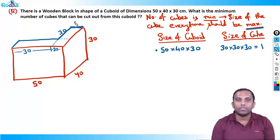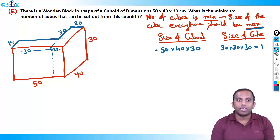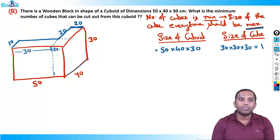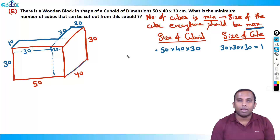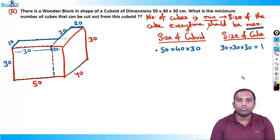So there's a new cuboid of 30 × 30 × 10 in front of me. What is the maximum size cube I can cut out from this cuboid? Obviously I can cut a cube of size 10 × 10 × 10 from it — since 10 is the smallest dimension. From this 30 × 30 × 10 cuboid, since each dimension is divisible by 10, how many cubes of 10 × 10 × 10 can be cut? That is 3 × 3 × 1 = 9 cubes.